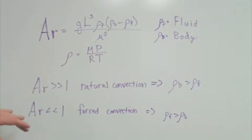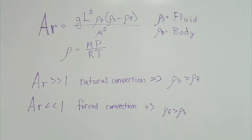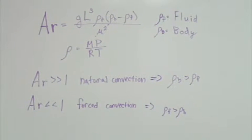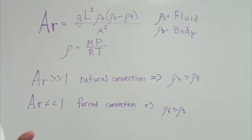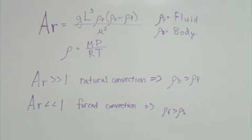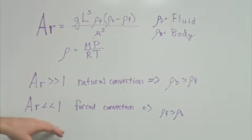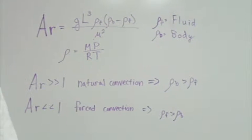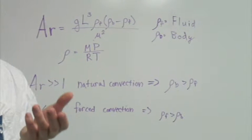When Archimedes' number is greater than one, you're going to have natural convection, so that substances move in the direction of their densities. Objects with greater densities tend towards the bottom, and objects with lighter densities tend towards the top. When Archimedes' number is much less than one, or negative, you have forced convection, which means the opposite — objects with greater density essentially move to the top.